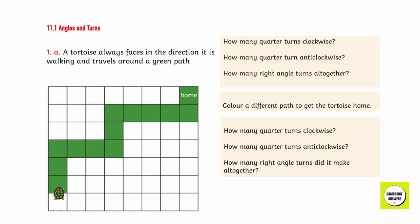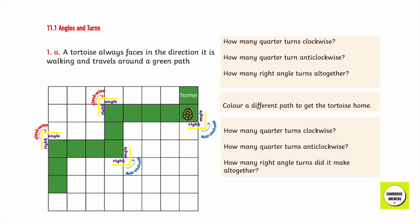First: right angle clockwise, right angle anti-clockwise, right angle clockwise, right angle anti-clockwise. How many times did he turn a quarter turn clockwise? Two. How many times did he turn a quarter turn anti-clockwise? Two. How many right angle turns did he make altogether? Four.